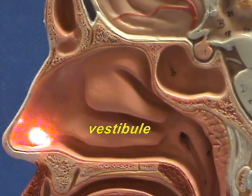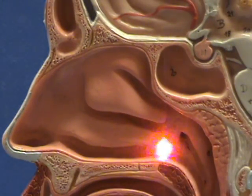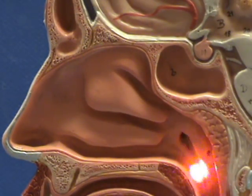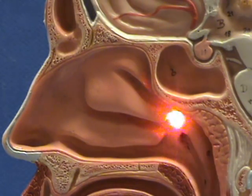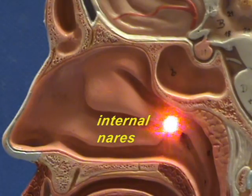This is the vestibule of the nasal cavity. Right back here, the nasal cavity extends to a passageway between the nasal cavity and the pharynx, which is back here. This passageway is referred to as the internal nares.